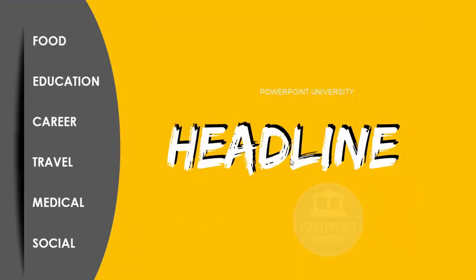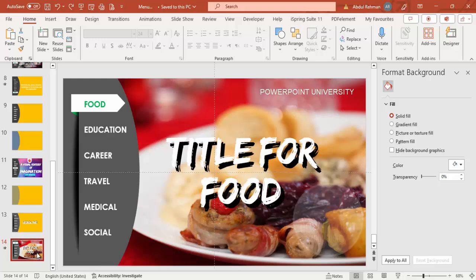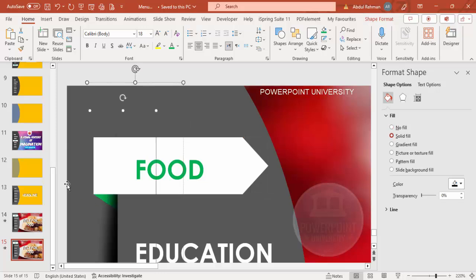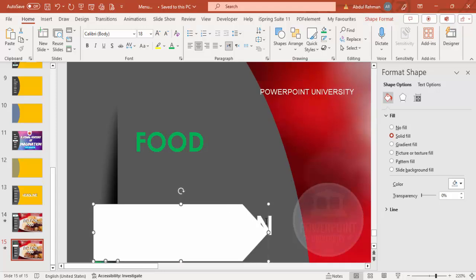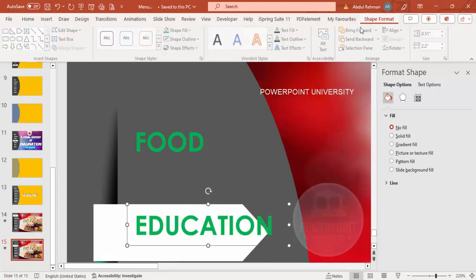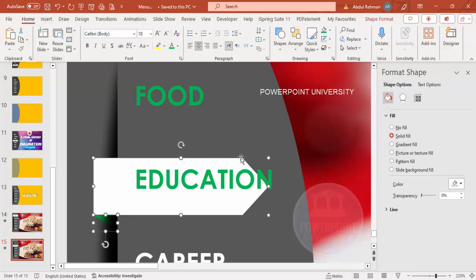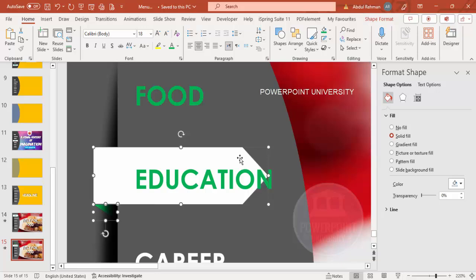Now for Education: right-click and duplicate the slide. Move the indicator objects — the pentagon and triangle — down to the Education menu item. Select Education, make its text green, and bring it to front. Align the indicator shapes properly. Remember the size of the indicator must stay consistent across all slides.